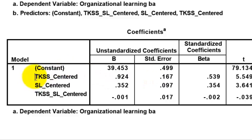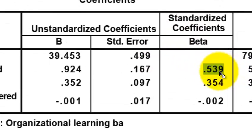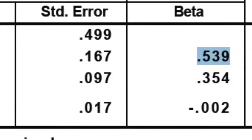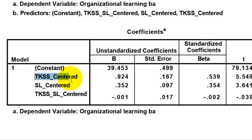This section tells you about your individual variables. For your TKSS centered, you look at the beta weights. By itself, this one IV — TKSS — is responsible for the variance in the DV. So this IV is your strongest predictor of your DV and it is significant.